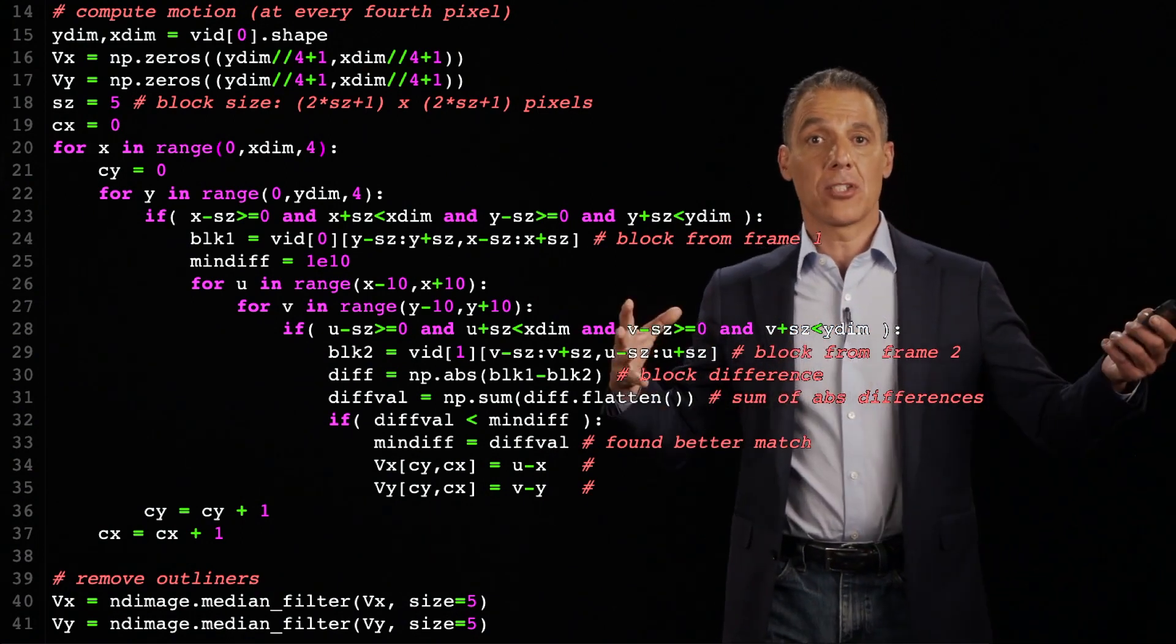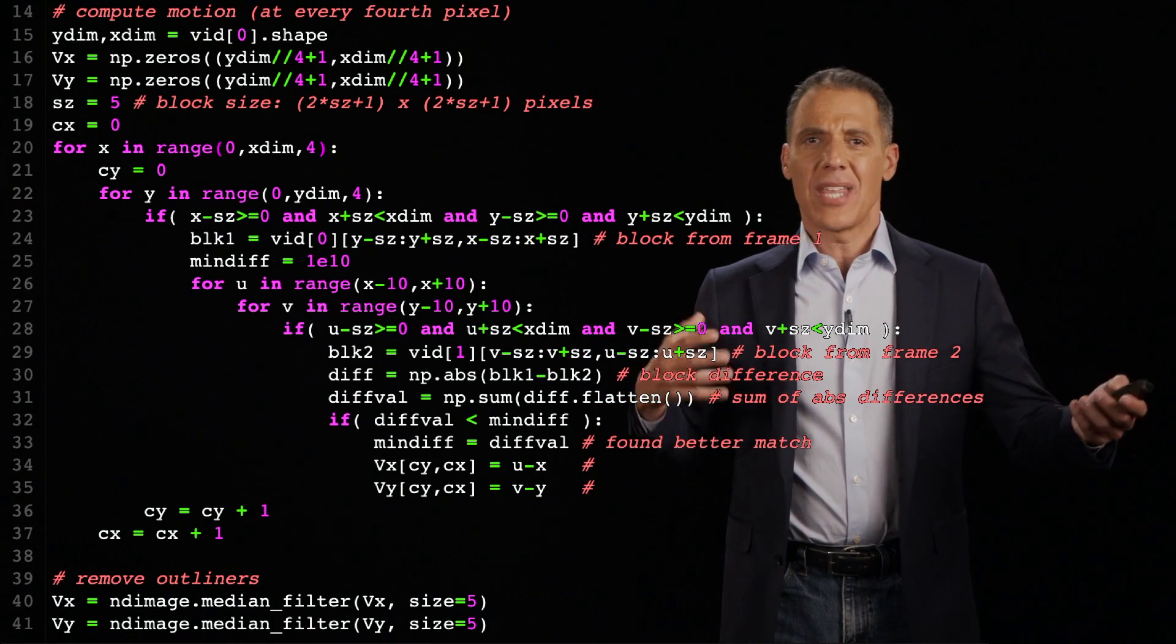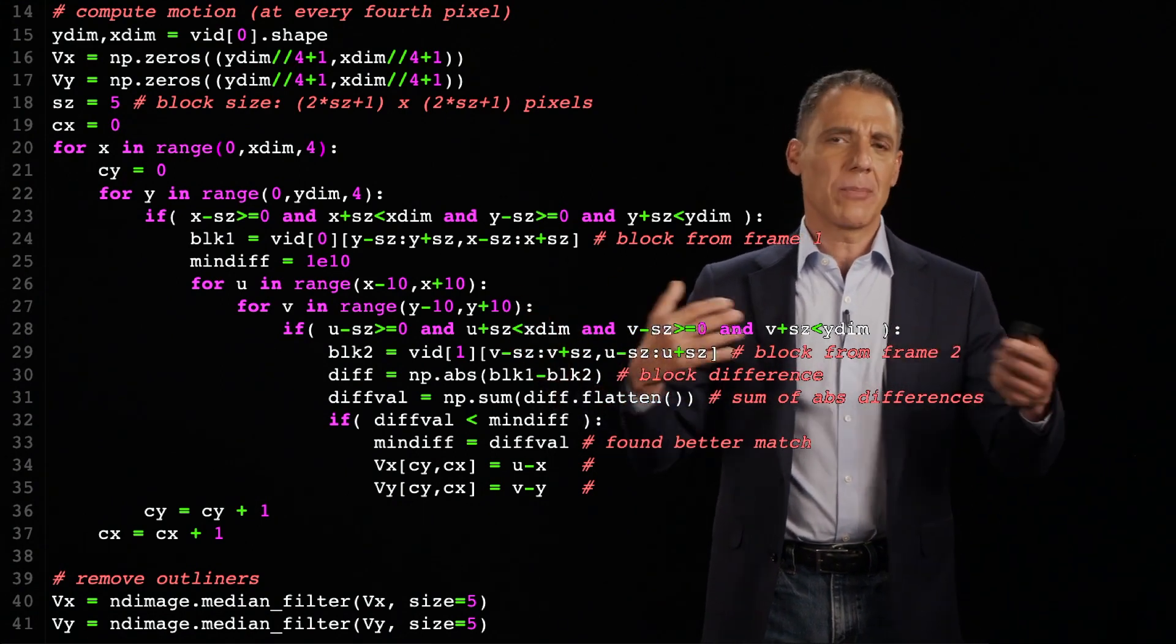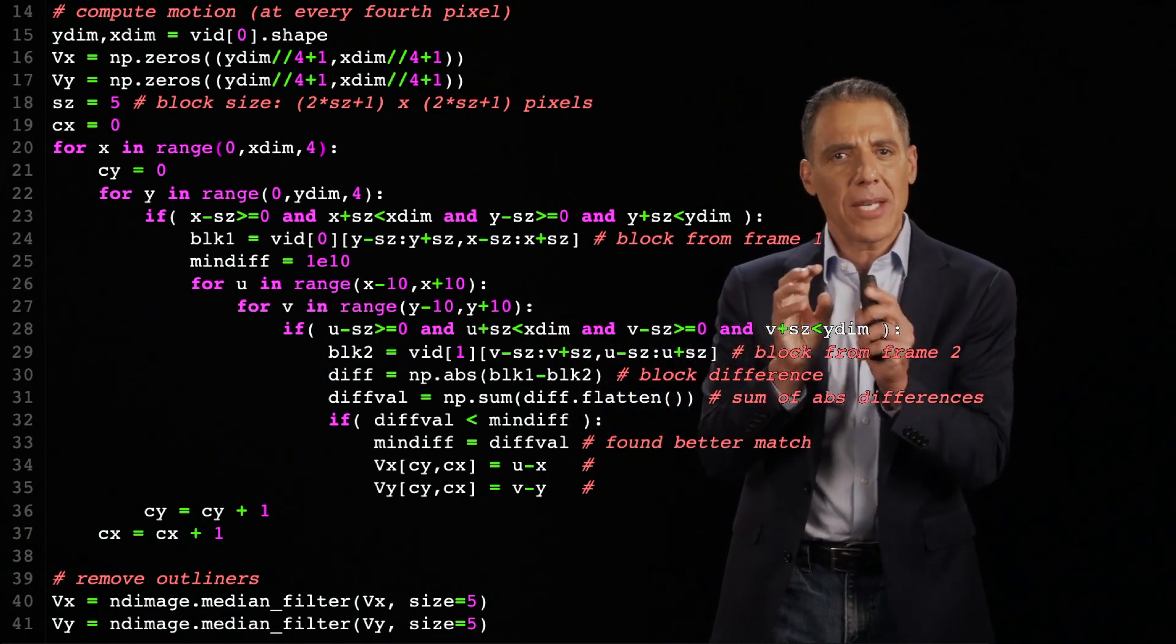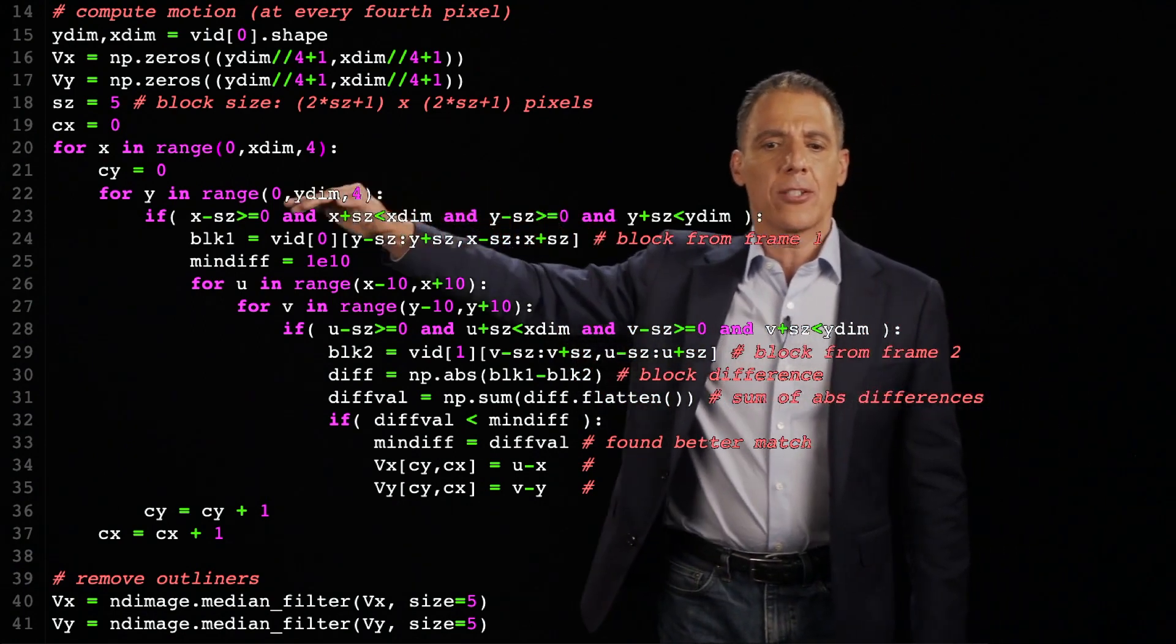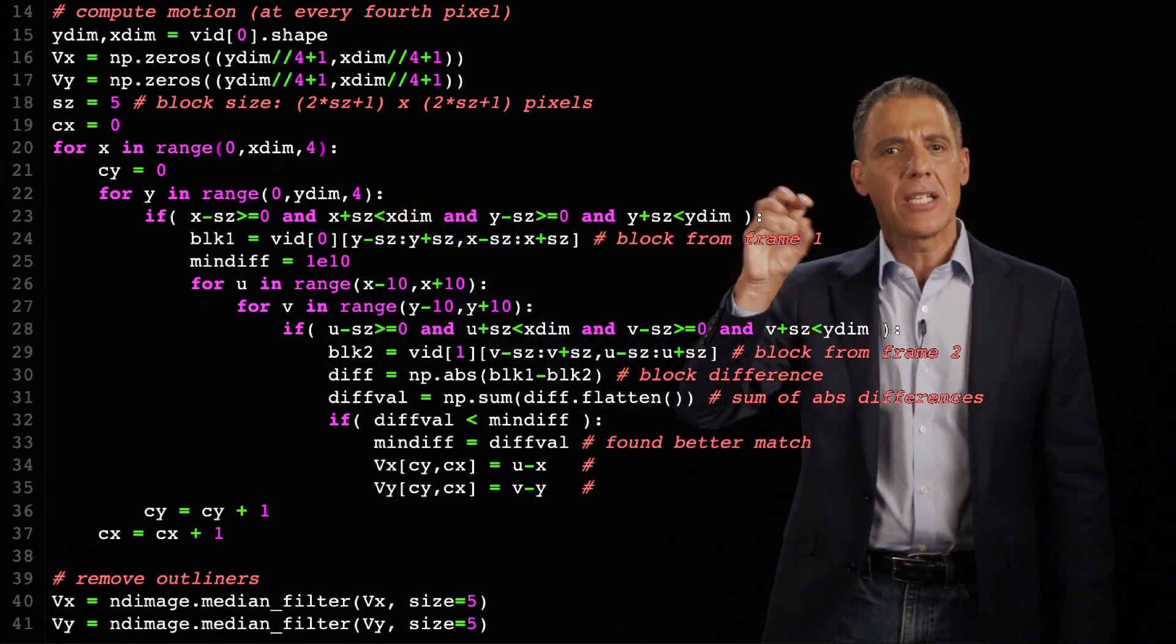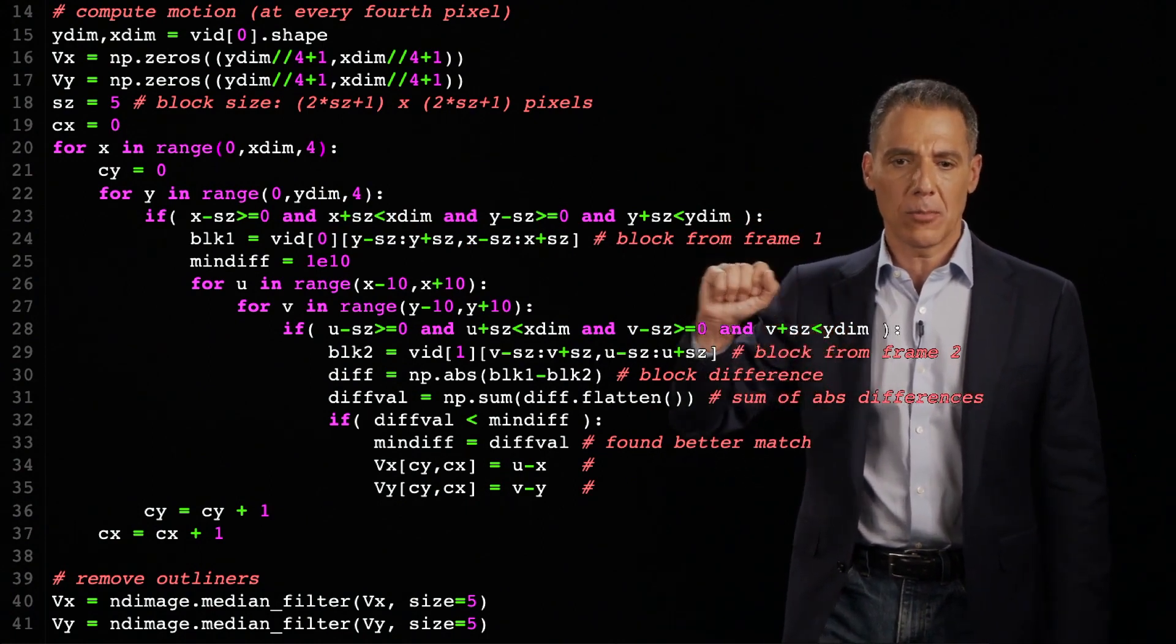Larger patches are likely to have more distinct characteristics, but then you're estimating motion across something, maybe a car and a background. So you want to pick this compromise in between. And so I picked five by five, which is a pretty good sized patch, not too big, not too small.